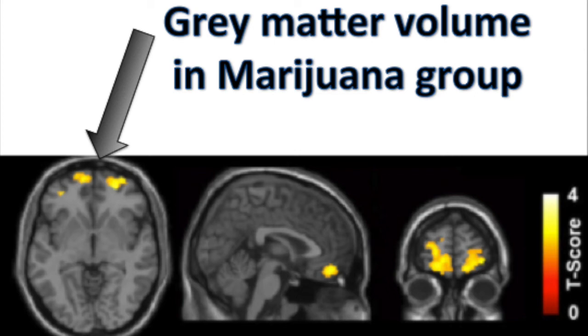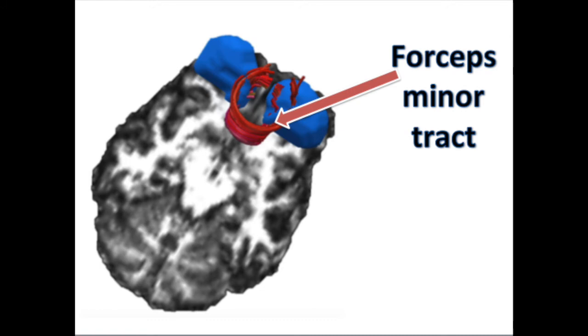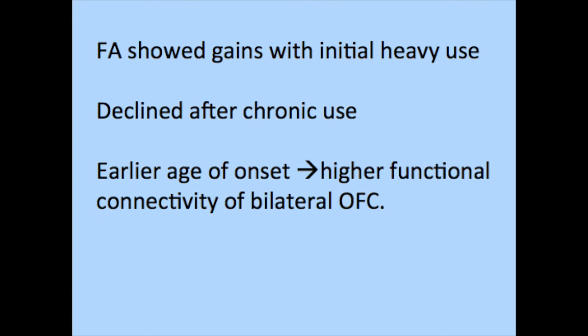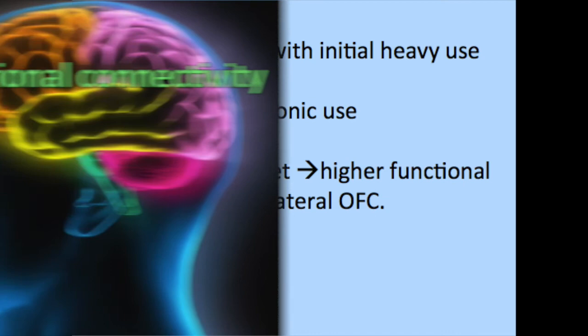The cannabis group had higher functional activity compared with the control group in all four nodes. The forceps minor fiber density, axonal diameter, and myelination of white matter were all greater in the cannabis group. The FA showed gains with initial heavy use but declined after chronic use. Earlier age of onset leads to higher functional connectivity of the bilateral OFC. The greater the functional connectivity of the left temporal cortex to the bilateral OFC, the lower the total score on the MPS. These results conclude that marijuana use was not significantly correlated with the mediator variables and outcome on the IQ test.